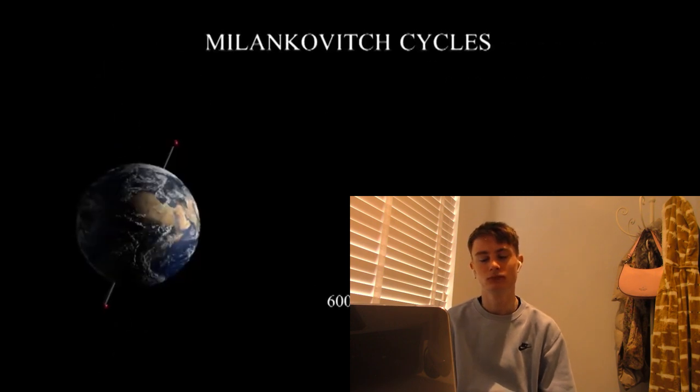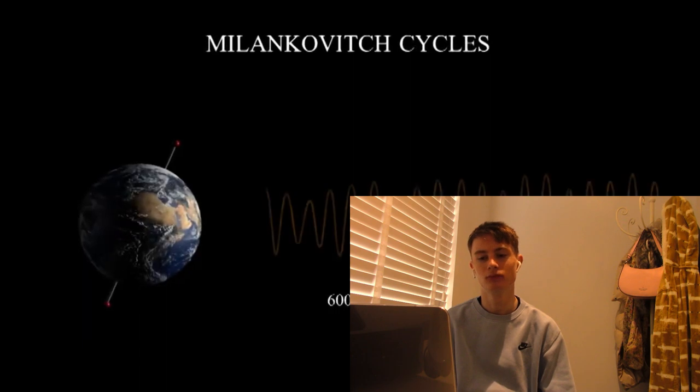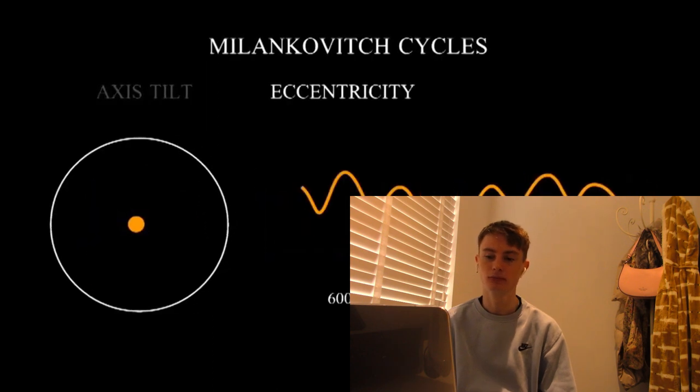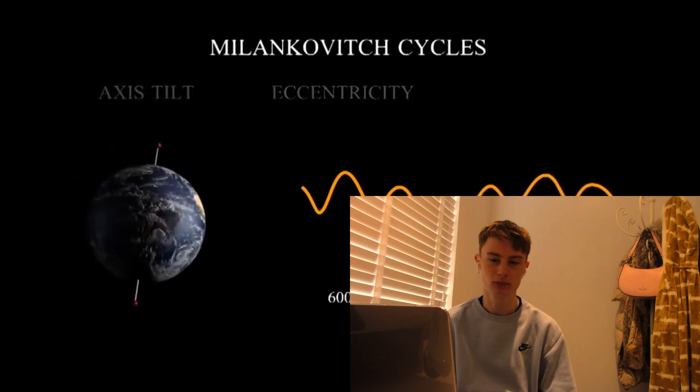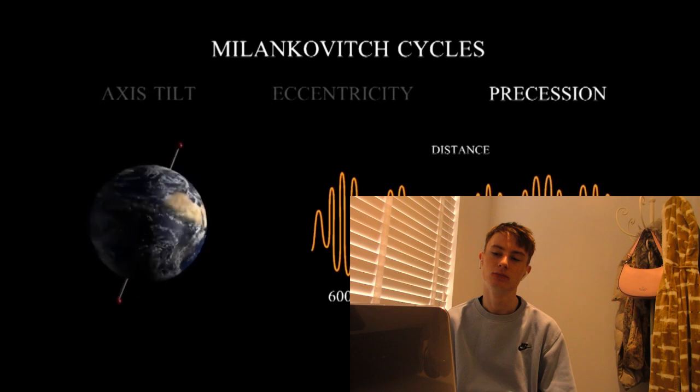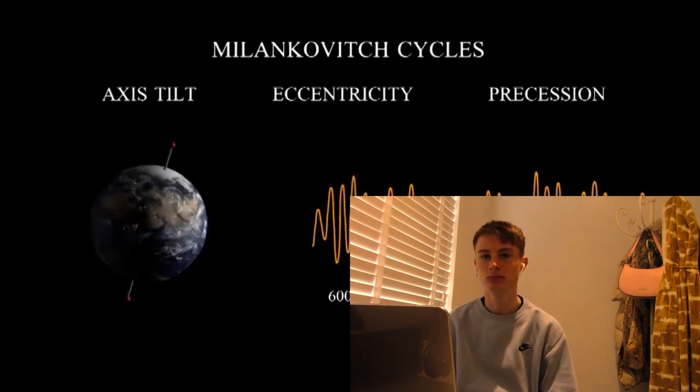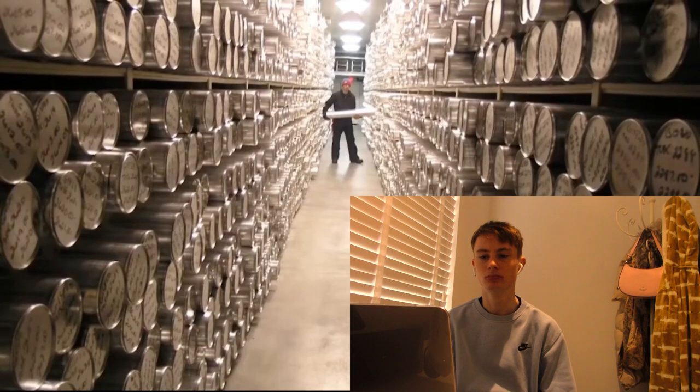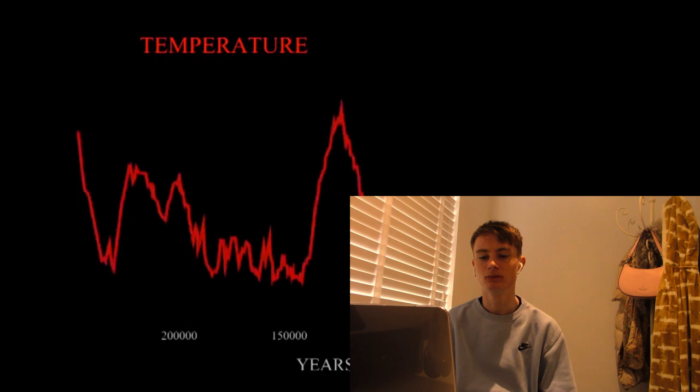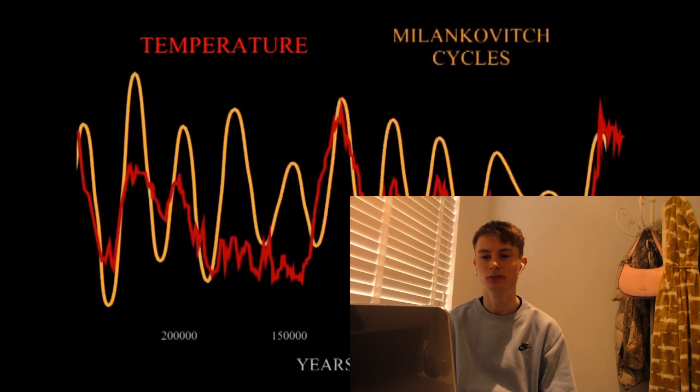The amount of summer sunlight is affected by three long-term cycles. One changes the tilt. One makes our orbit more circular or more oval. And one changes how the distance to the Sun matches with the changing of the seasons. These three cycles powerfully impact our climate. Scientists have measured the history of our climate using ice cores. Earth's climate is complicated. You can't just reduce it to a single input. But the Milankovitch cycles have played a key role in our climate for hundreds of thousands of years.